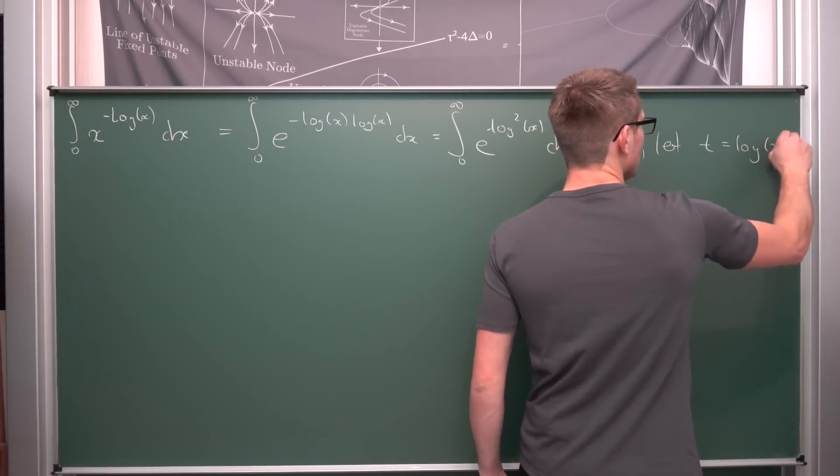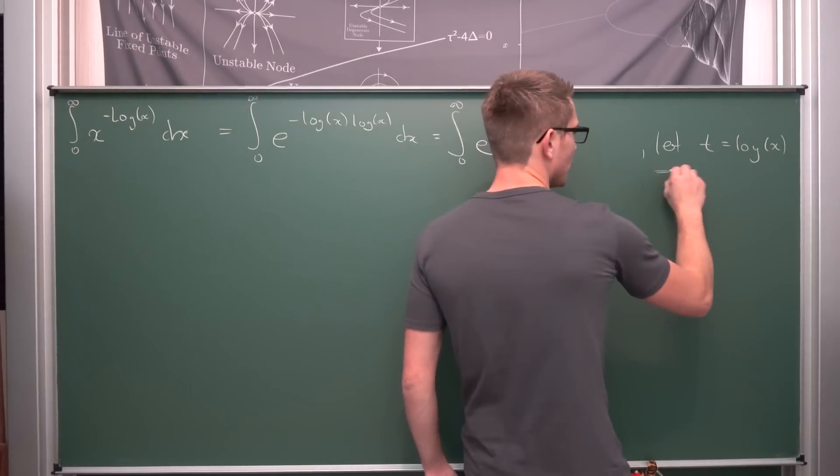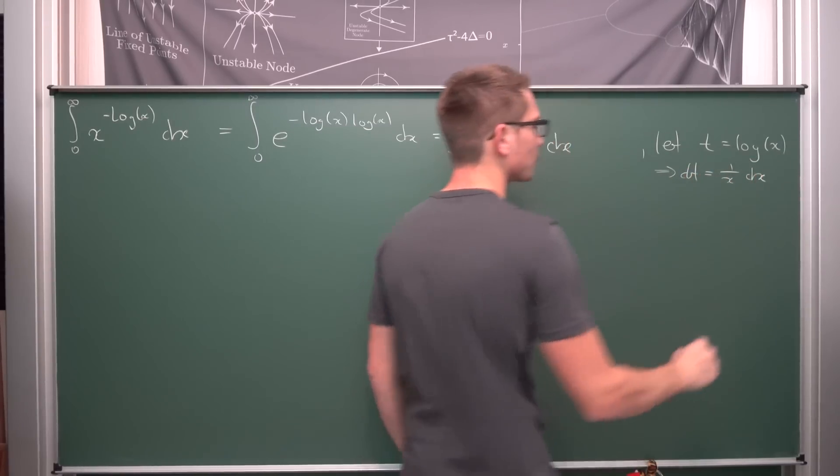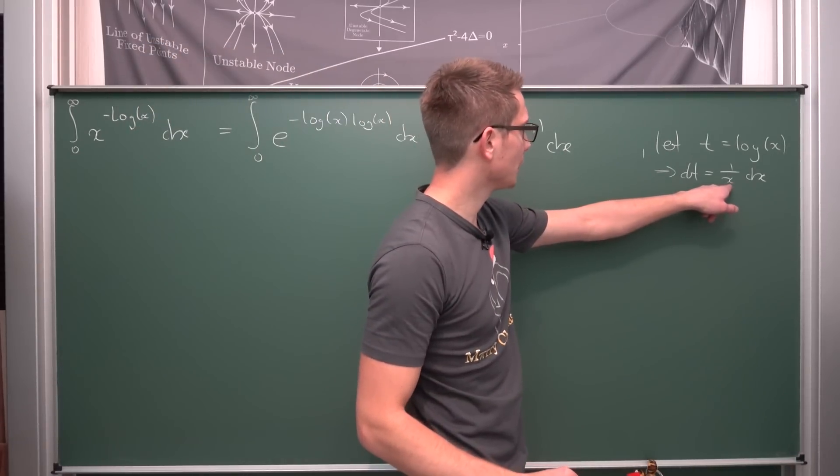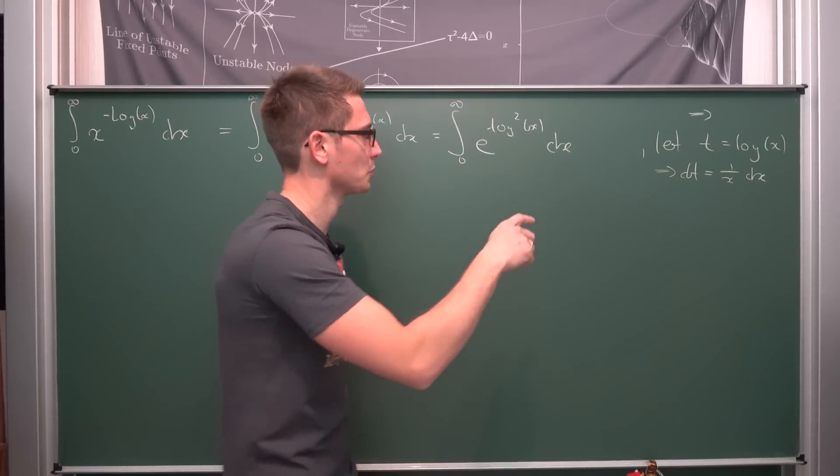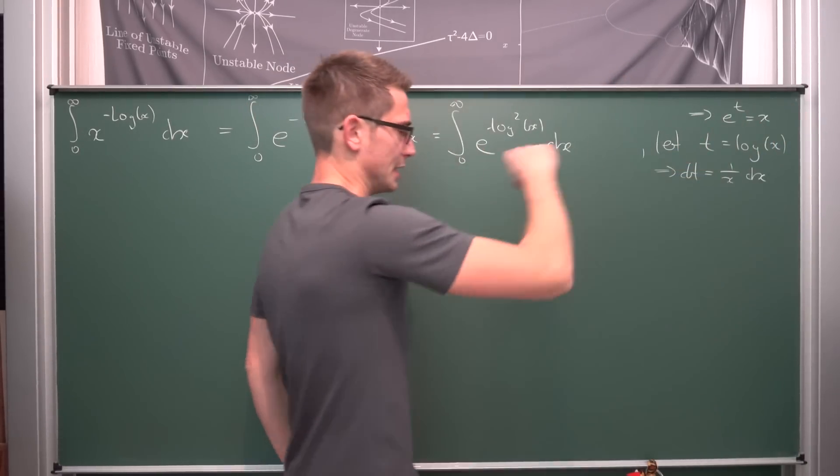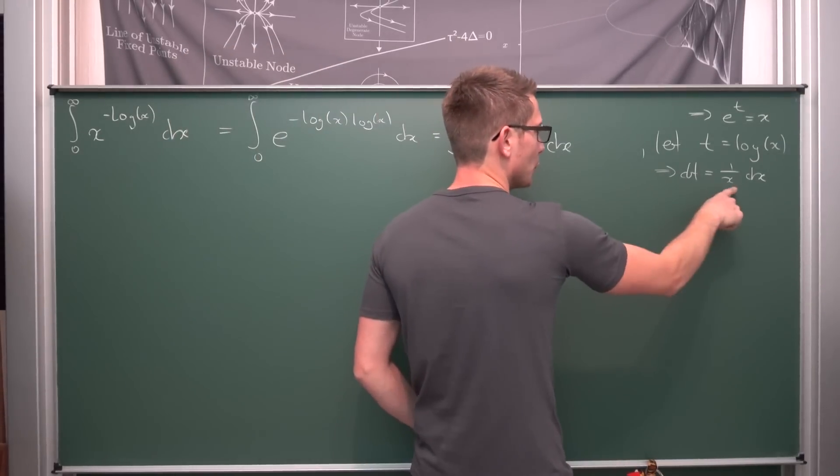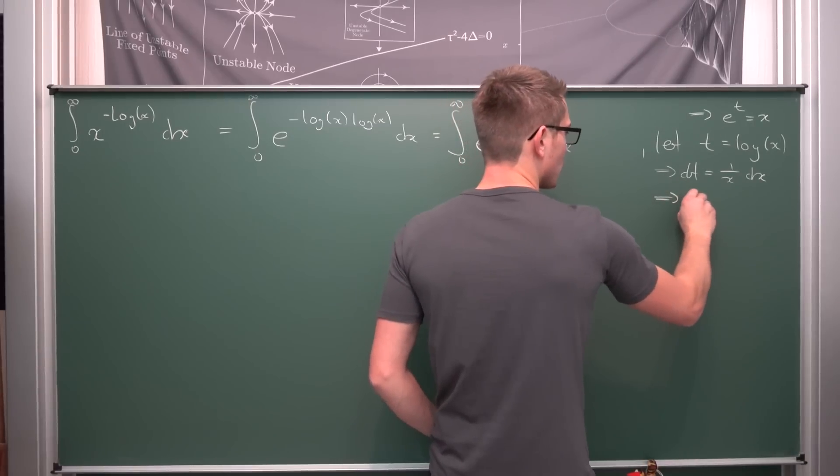Let t, as always, be equal to log of x. If we differentiate this, we get that dt is nothing other than 1 over x dx. X is e to the t, so using the exponential function on both sides gives us e to the t being just x. If we multiply both sides by x here, we get e to the t dt being equal to dx.